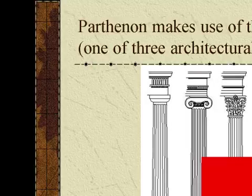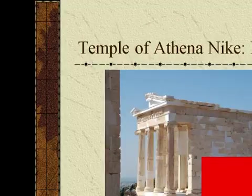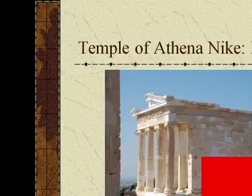The architectural parts include: cornice, frieze, architrave, capital, shaft, and base. Here is the Temple of Athena Nike and its Ionic Order.